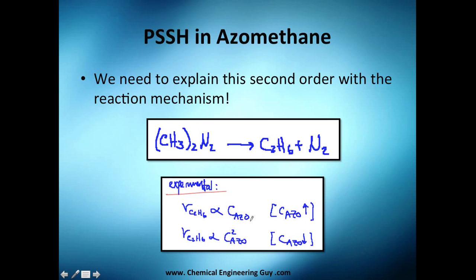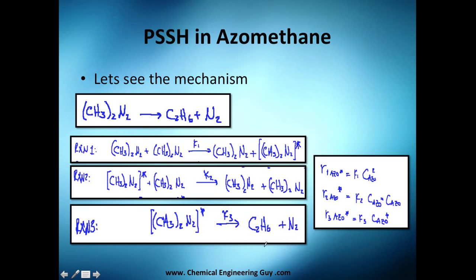Experimental data has shown that at high concentrations, azomethane acts as first order, but at low concentrations it acts as second order. So when high concentration is used, you can apply the first-order rate law. It's tricky, and if you were running the experiment, you would definitely be worried about that. Now let's look at the actual mechanism.